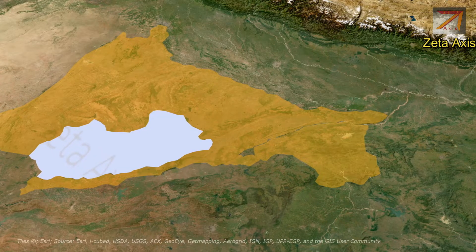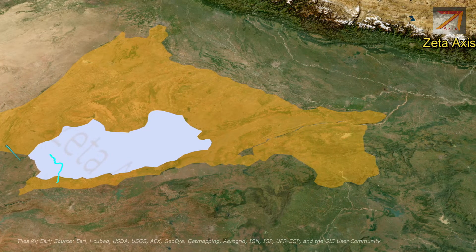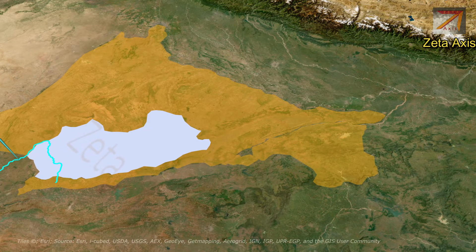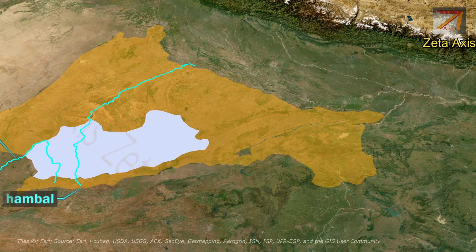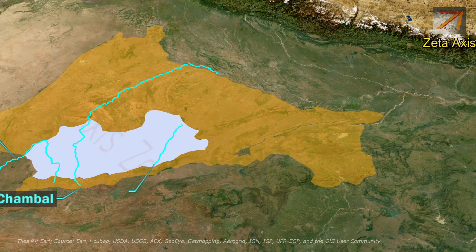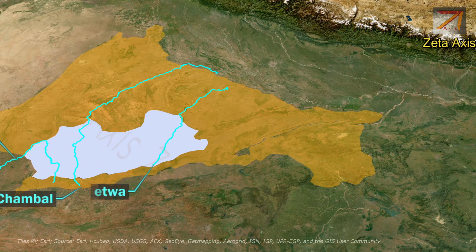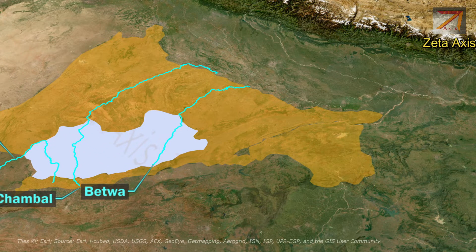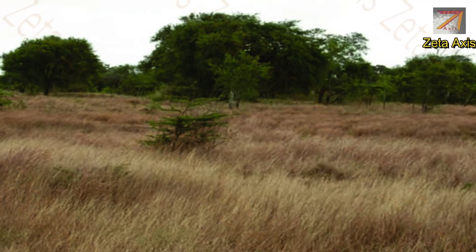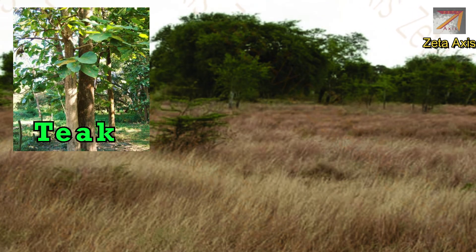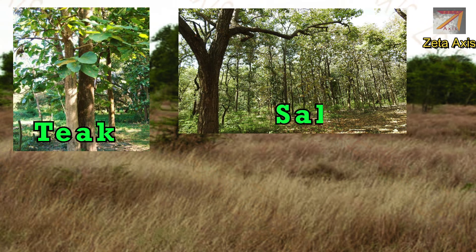The Malwa Plateau is drained by the Mahi River in the western part, Chambal River in the central part, and Betwa River in the eastern part. The Malwa Plateau has savanna-type vegetation with scattered teak and sal forests.